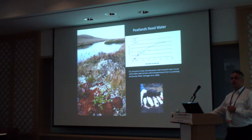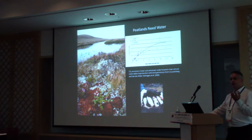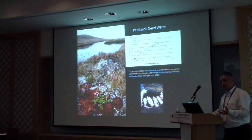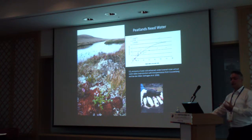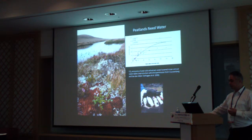Carbon dioxide coming out of the peatland increases. So if you drain a peat bog, you start to lose the carbon that's been stored for thousands of years.